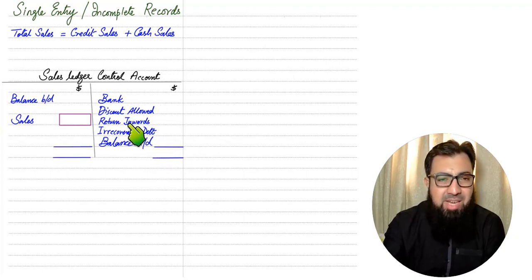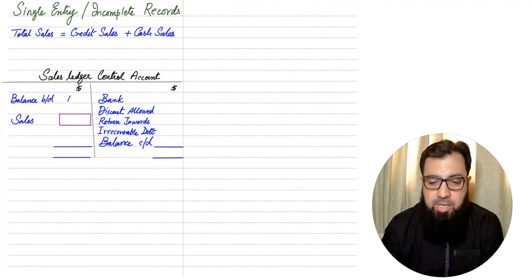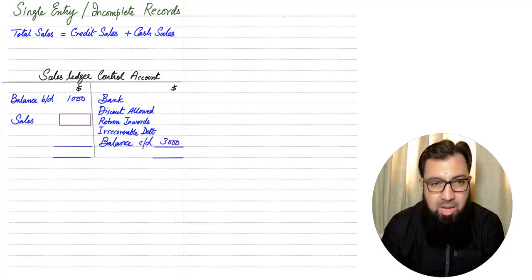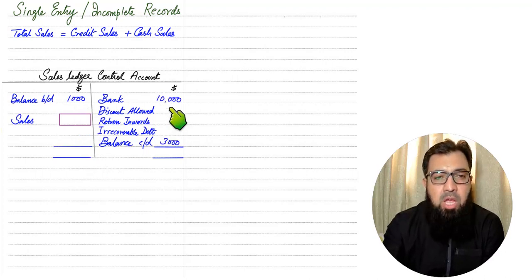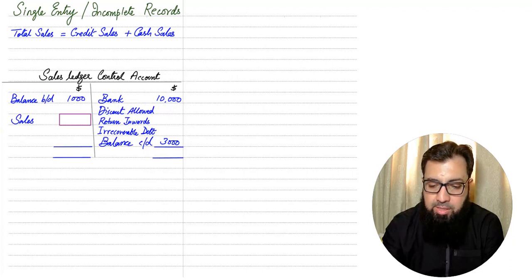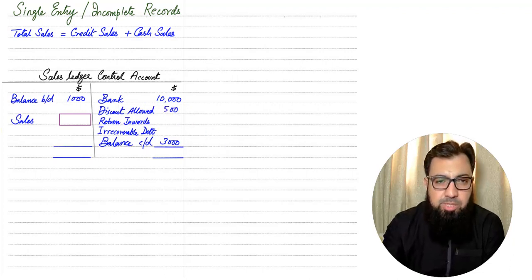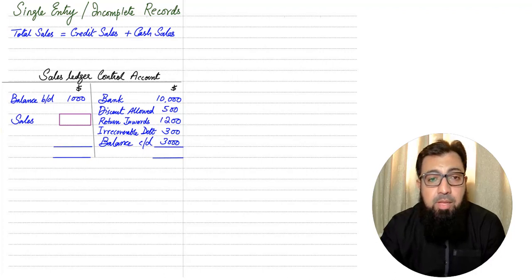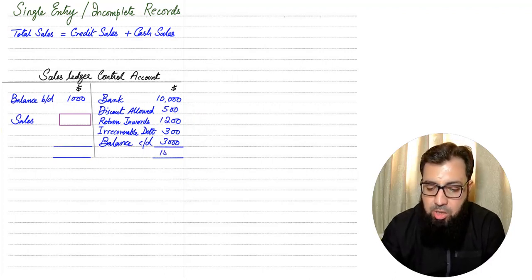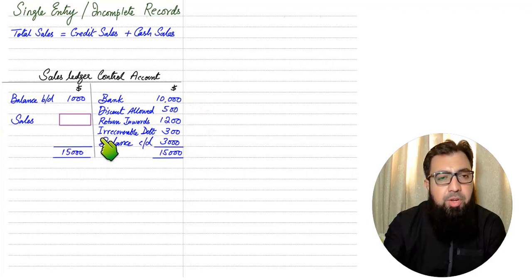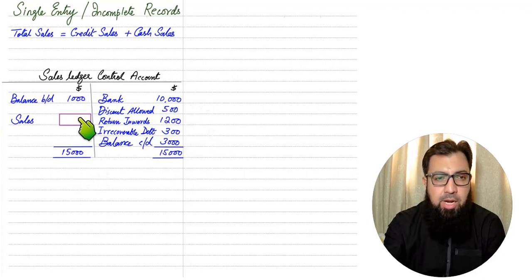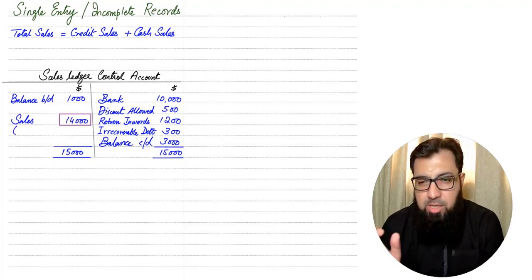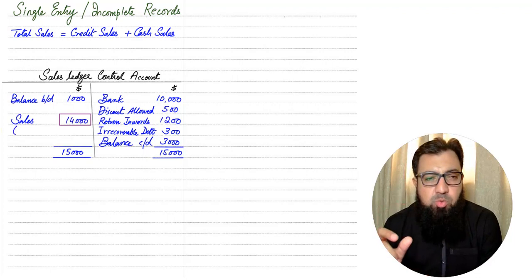Let us put some dummy figures. If at the start of the year we have a debtor balance of 1,000, at the end of the year a trade receivable balance of 3,000, and we have received 10,000 cash or cheque from customers during the year, then we write 10,000 here. If we have allowed a customer discount of 500, return inward of 1,200, and bad debt of 300, and we balance all of this — the greater side is the credit side, totalling 15,000. Deducting the opening balance of 1,000 gives us the sales figure.